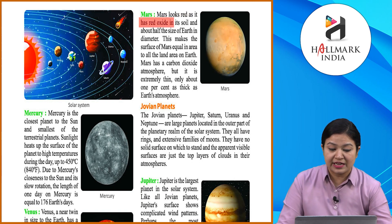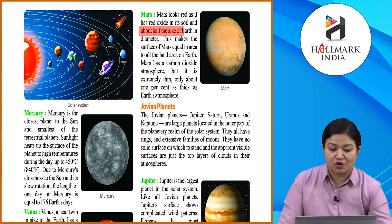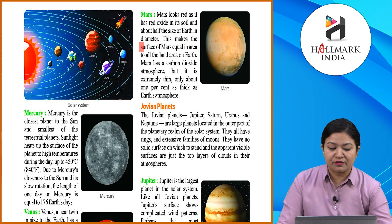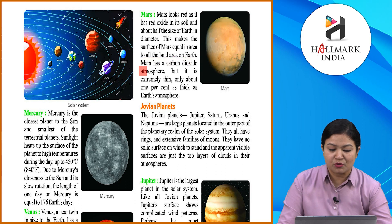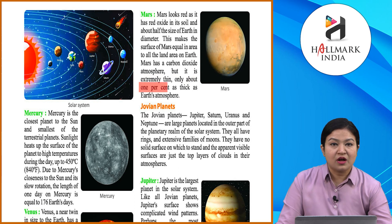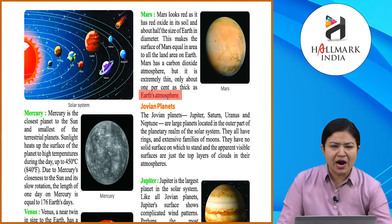Mars looks red because of red iron oxide in its soil. It is about half the size of Earth in diameter, which makes the surface area of Mars equal to all the land area on Earth. Mars has a carbon dioxide atmosphere, but it is extremely thin — only about one percent as thick as Earth's atmosphere.